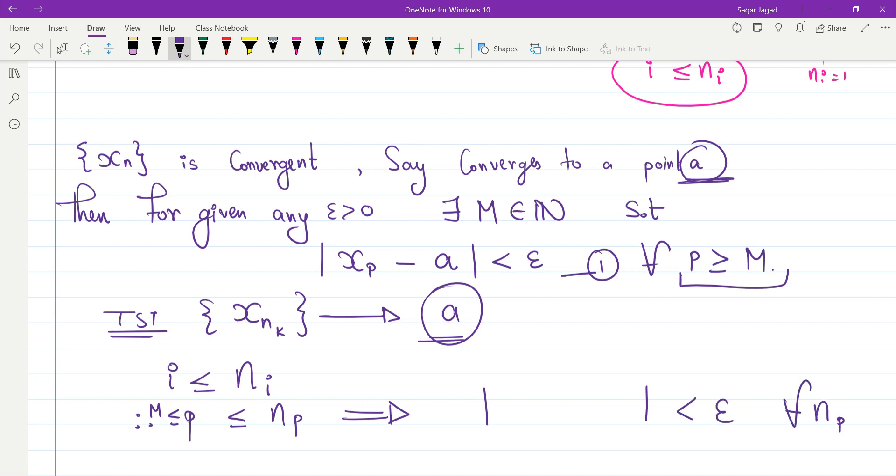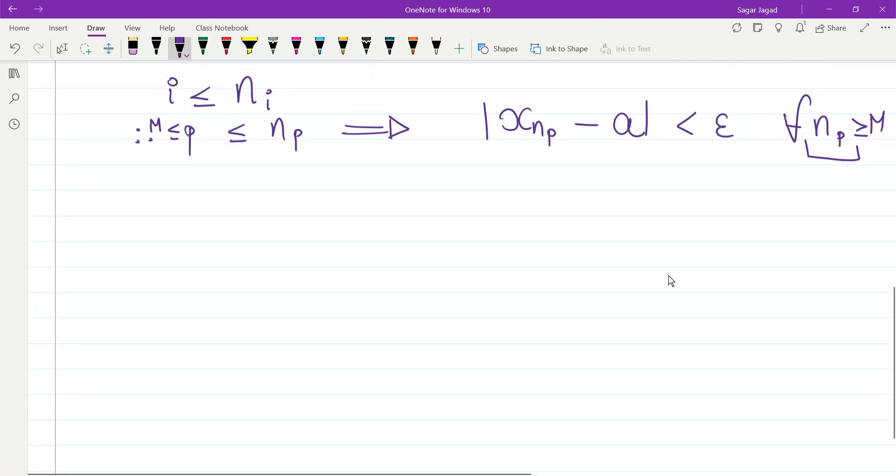Since this inequality is true for every p greater than or equal to M, this implies my mod |xnp - a| is less than epsilon for all np which are greater than or equal to M. We need to understand: this is true for every number which is greater than M, and we know that these np's are also greater than M. Equation 1 holds for all xnp's where np's are greater than or equal to M.